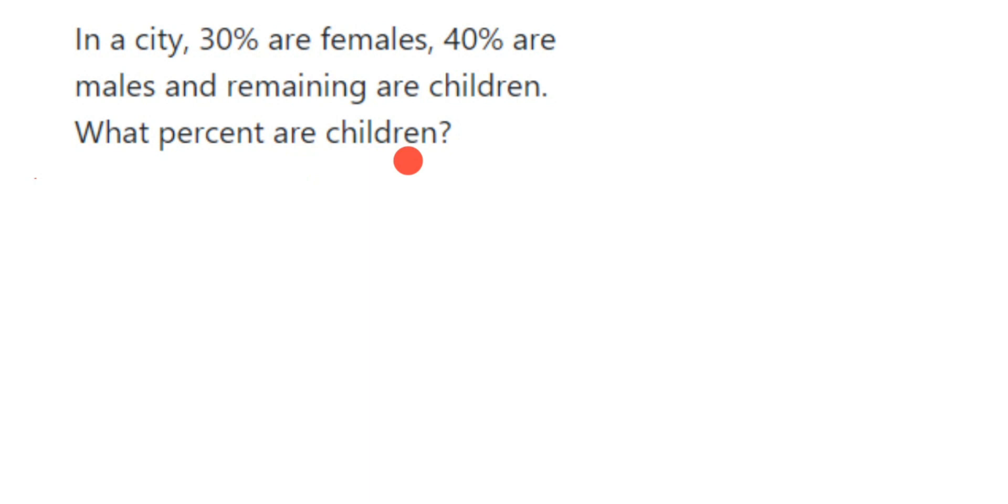Suppose the population of the city is 100%. In that 100%, they have given 30% are female, 40% are male. The remaining will be - so from 100% we have to just subtract 30% and 40%, and then you will get the remaining percentage.